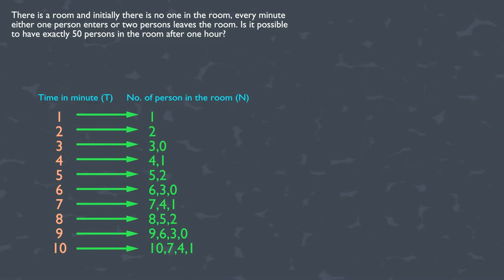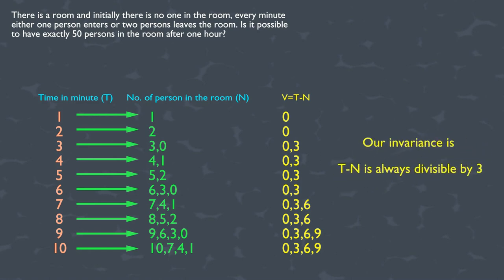Here it might feel difficult to find the connection between time T and the number of persons N. But if we subtract the number of persons from the time T, then we will get the pattern or our invariance in this situation. And from the list, we can see that this value is always a multiple of three. So in this particular problem, the invariance can be written as time minus number of persons in the room is always divisible by three. In short, T minus N is divisible by three.